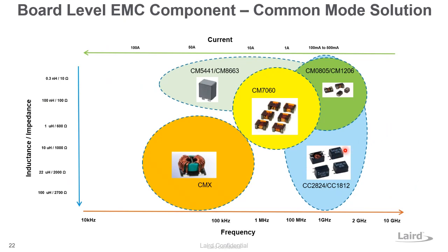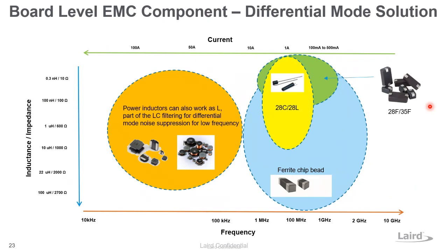You can approach Laird for the best solution. If nothing standard fits, Laird can offer a custom solution. For differential mode, Laird offers ferrite beads, ferrite chip bead assemblies, and power inductors. Inductors can be used together with capacitors to form an LC filter to suppress differential mode noise. This portfolio provides total coverage for different current ratings, different frequencies, and different performance targets.